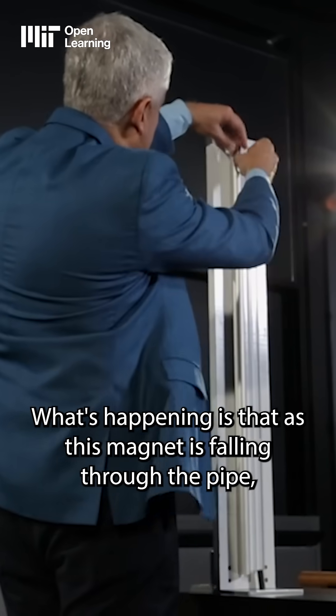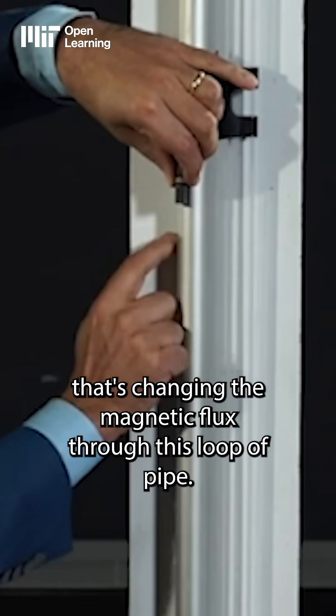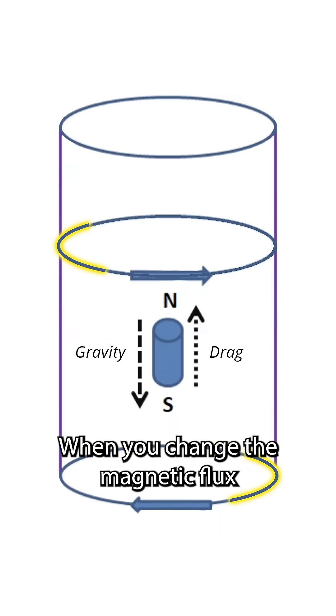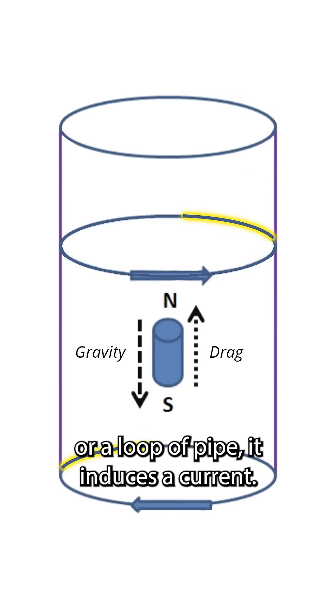What's happening is that as this magnet is falling through the pipe, that's changing the magnetic flux through this loop of pipe. When you change the magnetic flux through a loop of aluminum or a loop of pipe, it induces a current. That's Faraday's law.